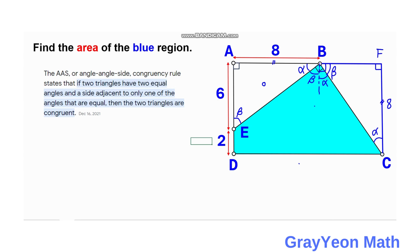By the Angle-Angle-Side (AAS) congruency rule: if two triangles have equal angles — in our case angle beta and angle alpha — and a side adjacent to only one of those angles is equal, then the triangles are congruent.